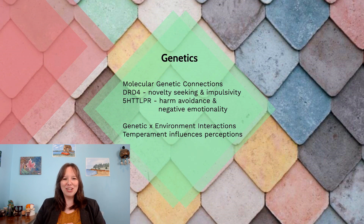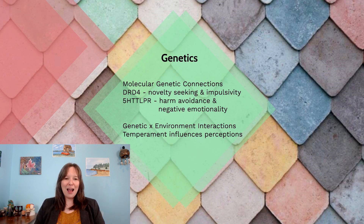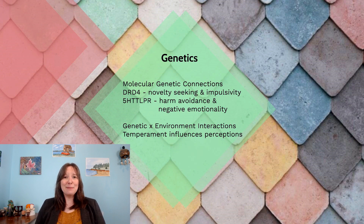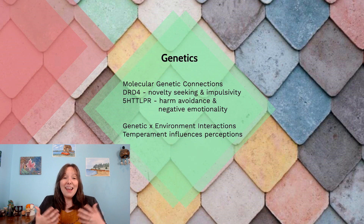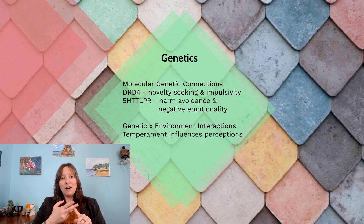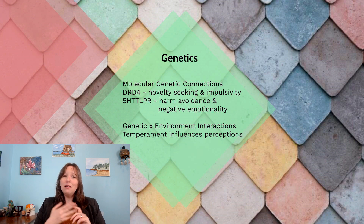Of course, this depends on whether you have the long form or short form of these genes, and you could have a combination of both or neither. So it's important to understand other genetic implications that Buss and Plomin's theory brought us to — such things as the gene-by-environment interaction theory. This is the idea that children, babies, teens, and even adults make passive, evocative, and active interactions with their environment all the time.